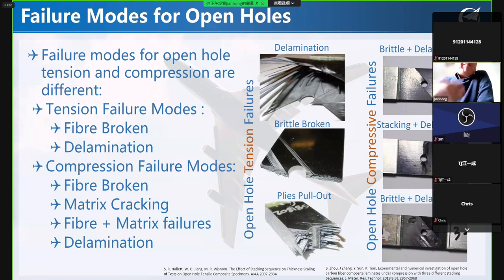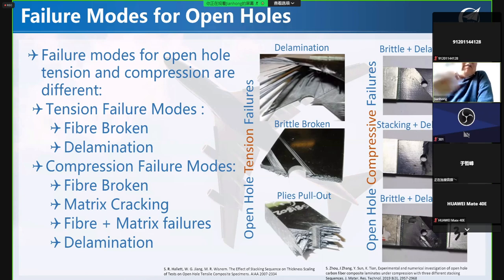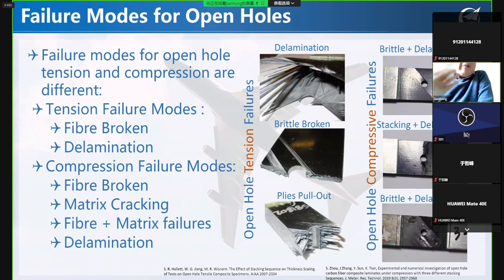Extending to structural complexity, we deal with open holes. Compared with the failure criteria, there are more failure modes in the laminate for open holes. In tension failure, we have fiber breakage and delamination — observed by Professor Michael Wisnom and Steve Hallett at Bristol University more than ten years ago. They found that if you can handle those two failure mechanisms — fiber breakage and delamination — you can predict open hole failure very well.